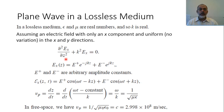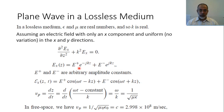This is a second-order differential equation with two solutions. The first solution is e to the power minus-jkz. Differentiating twice: the first derivative gives minus-jk times the function, and the second derivative gives minus-jk squared, which equals minus k-squared. So the second derivative of Ex equals minus k-squared Ex, and adding k-squared Ex gives zero — confirming this function satisfies the equation.